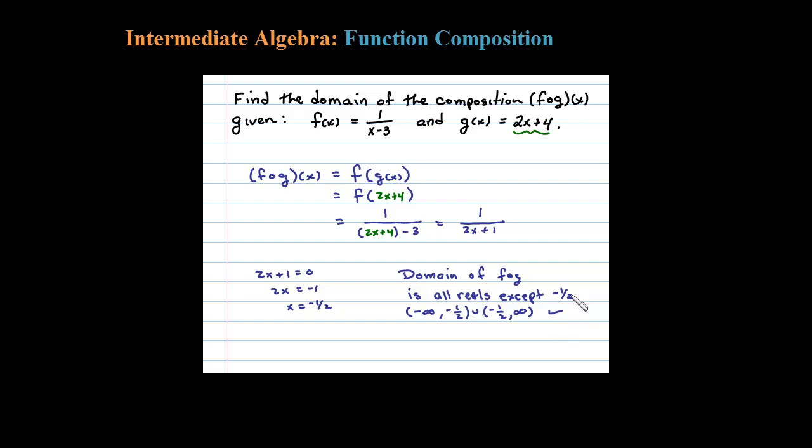Now let's think about this for a second. Watch what happens if I did plug in negative 1 half. If I plugged in negative 1 half, the two's would cancel, negative 1 plus 4 which is 3, and then when you plug in 3 into F of X you get that restriction. So you can see why negative 1 half is the restriction for the composition. In any case, the domain's all real numbers except for negative 1 half.